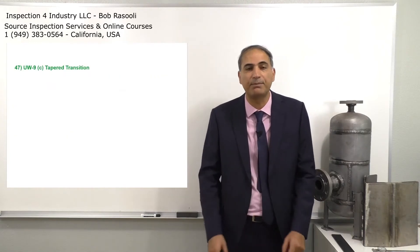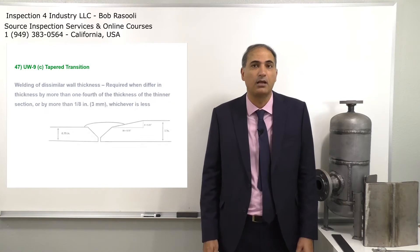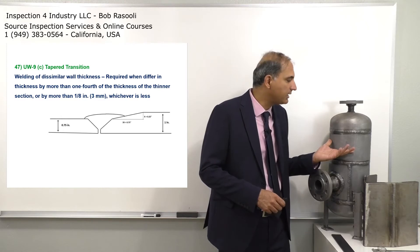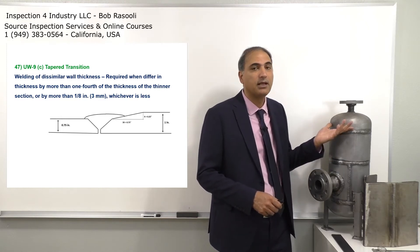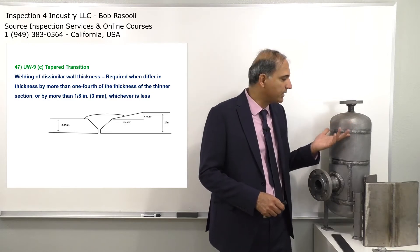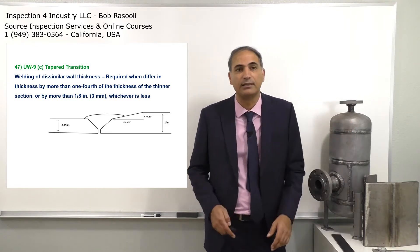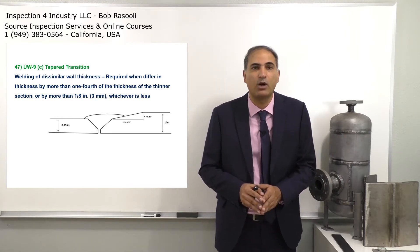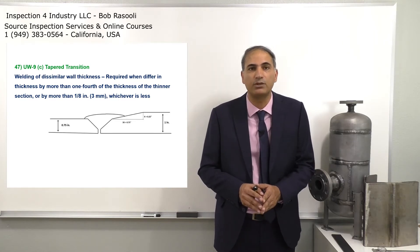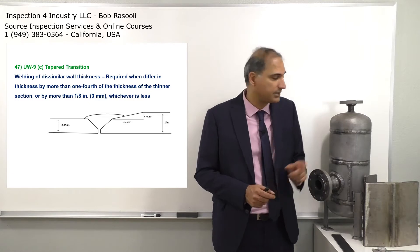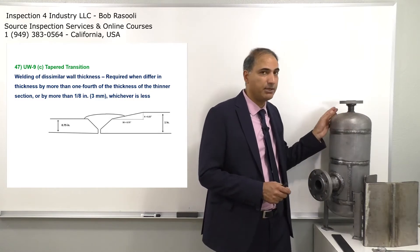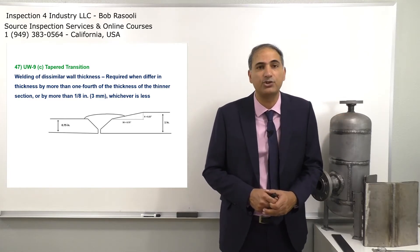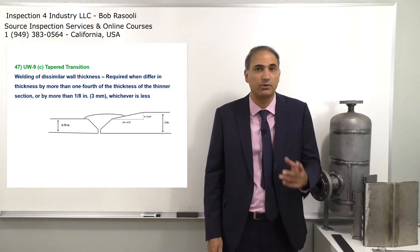UW-9C taper transition: when dissimilar wall thickness occurs — for example, a 3-inch wall thickness shell and a hemispherical head that is 1.5 inches — they are not the same thickness. There is a requirement for taper transition. Welding of dissimilar wall thickness is required when they differ by more than one-fourth of the thickness of the thinner part, or by more than 1/8 inch, whichever is less.